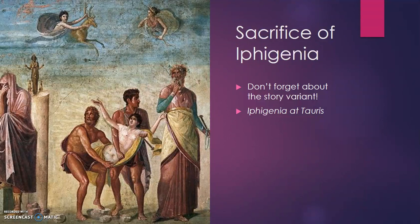As we learn in the play Agamemnon, he does go through with it. This play, Iphigenia at Aulis, is the story of how Iphigenia gets to Aulis — under what pretenses — and then what happens to her leading up to and directly after the sacrifice.